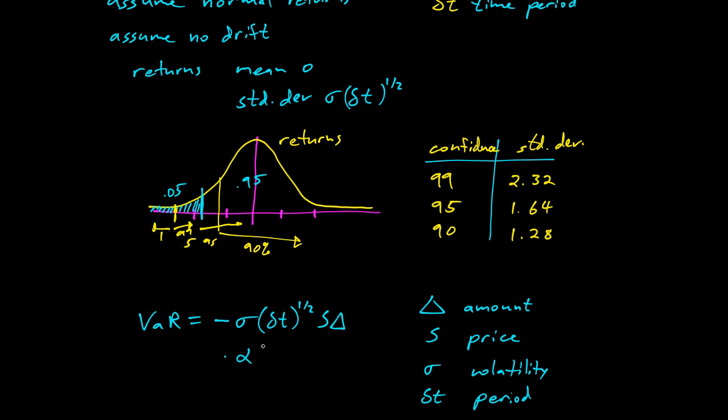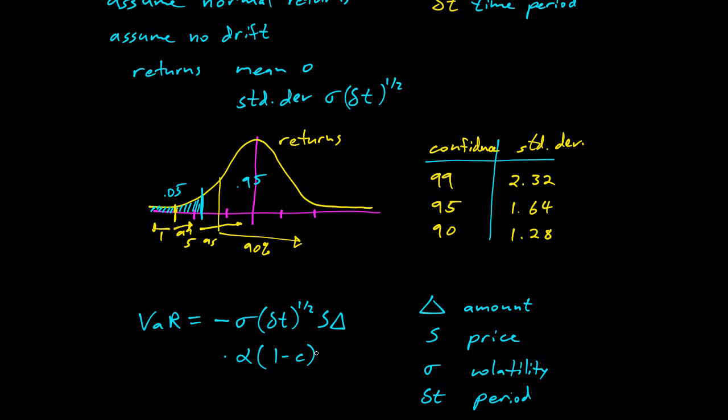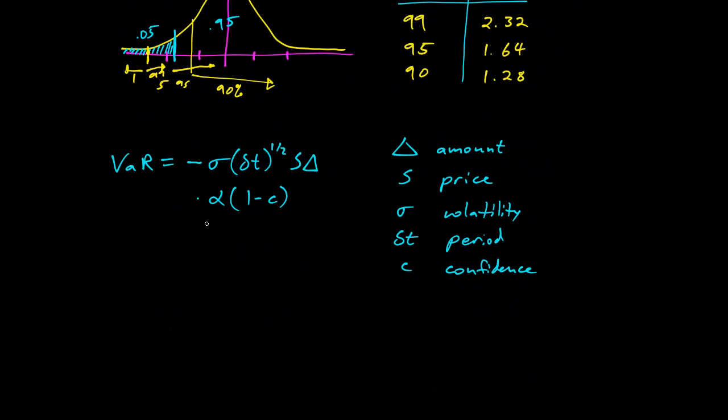Times alpha of one minus c. So c is our confidence. We should write that over here, c. So that will be the 95 or the 90 or whatever. And so what's alpha? Let's draw a table for alpha. So alpha is going to look like this. This is alpha.